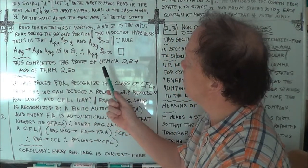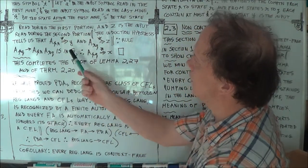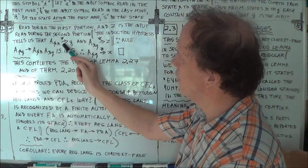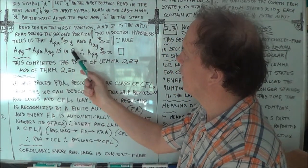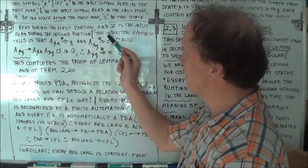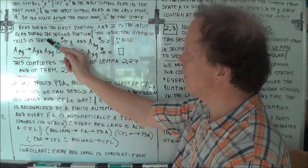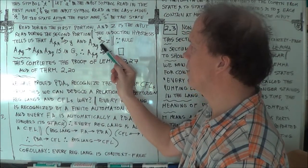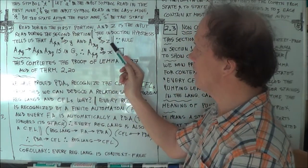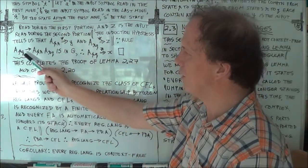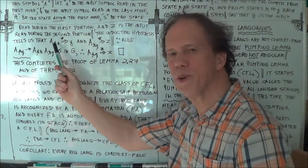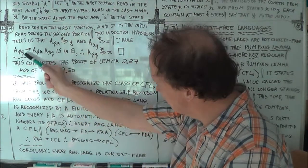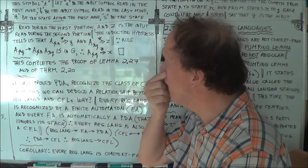The induction hypothesis says that from this variable you can derive the string Y. Again by the induction hypothesis, because this takes less than k plus one steps, and similarly this one takes less than k plus one steps, the induction hypothesis says from this variable you can derive Z. Now there's a rule, and this is why the rule was put into the rule base of your grammar, your big R, the set of rules.